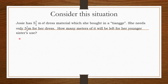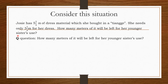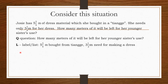Consider the situation. How many meters of it will be left for her younger sister's use? To be left for her younger sister's use, we are given five and one-half meters and three and one-half meters needed for making a dress.